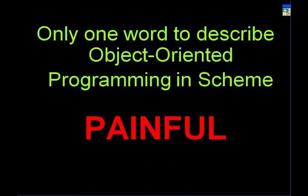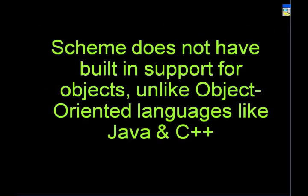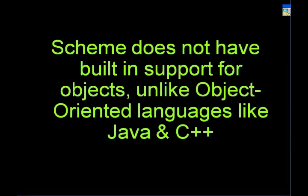The observation here really is that object-oriented programming in Scheme is painful — very, very painful. The reason for this is historical. Scheme does not have built-in support for objects, unlike languages like Java and C++. Scheme really appeared first around 1925 and was based on another language called Lisp. Lisp came out in 1958. This was so long ago, before OOP was even standardized — OOP was standardized only in the early 80s or early 90s. In Scheme, you do everything yourself.